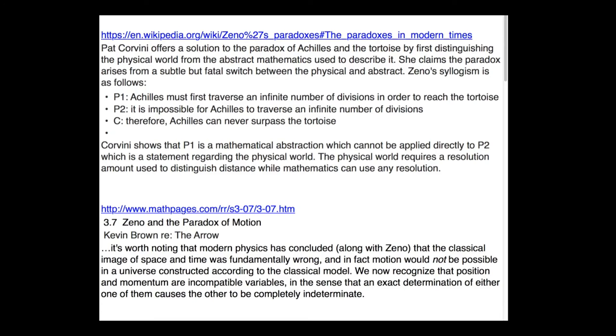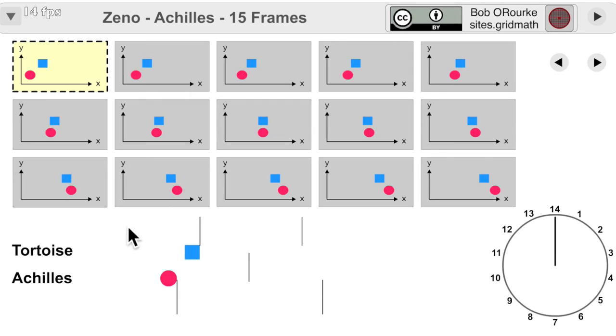These two ideas seem worth some thought. Corvini's approach seems similar to Courant-Robbins mentioned earlier. And Brown brings in some quantum physics ideas. Taking a closer look at unit distance per unit time.